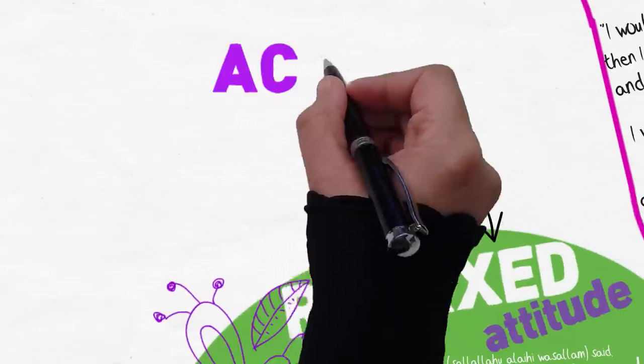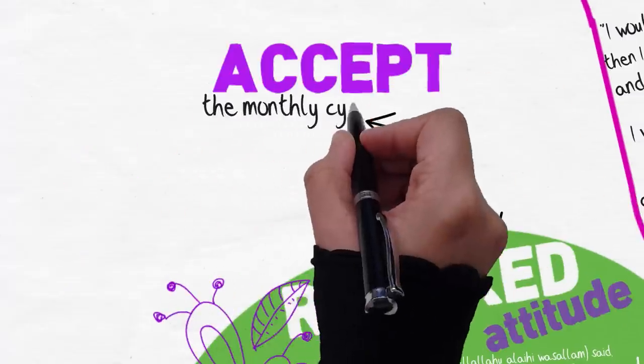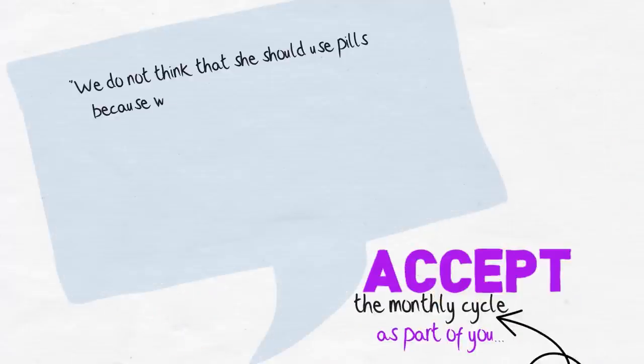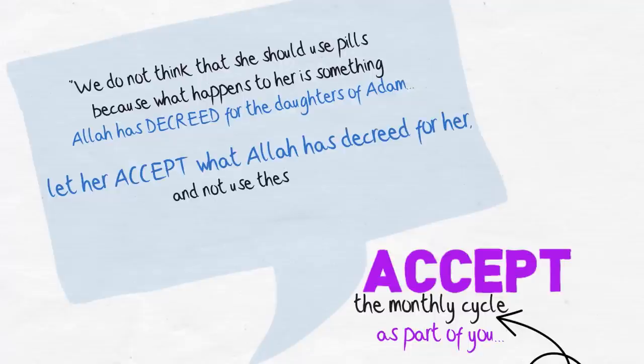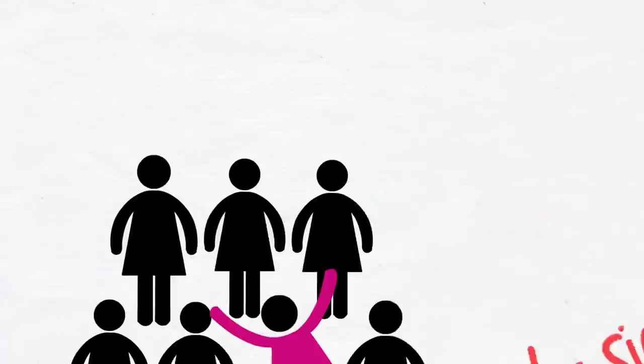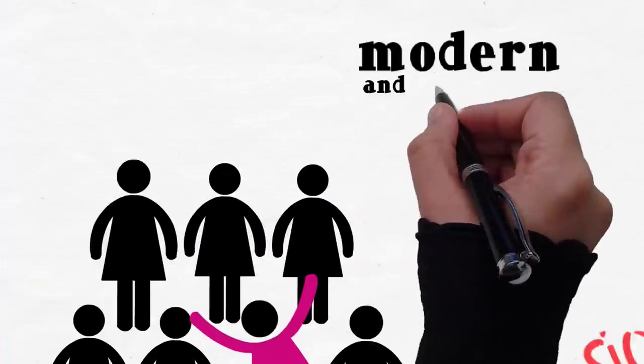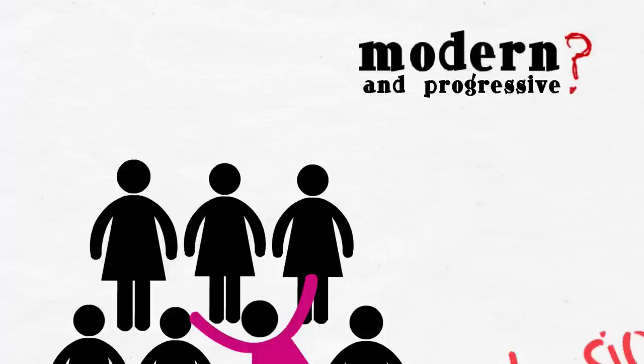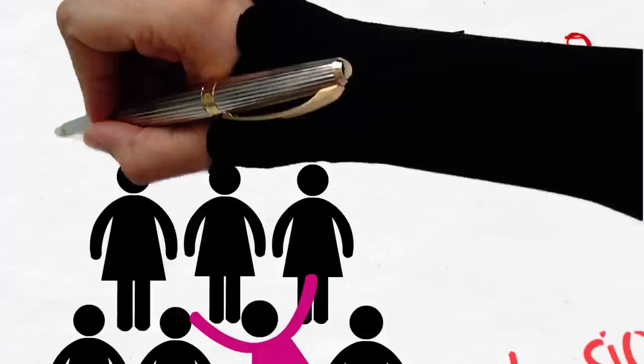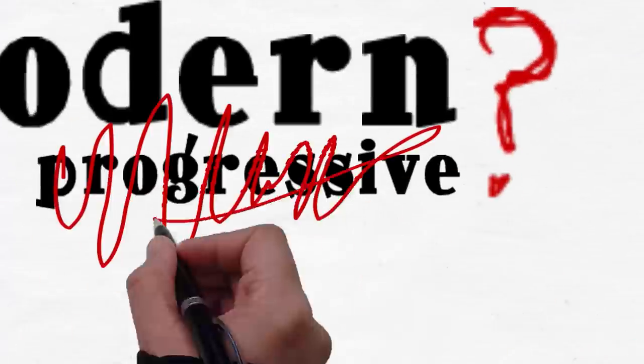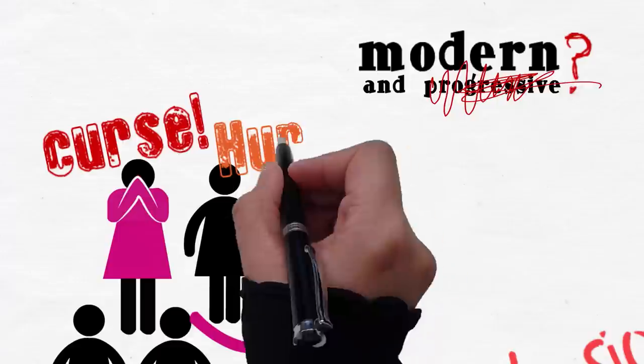And it is this relaxed attitude of accepting the monthly cycle as part of you which is reflected in the explanation of Islamic scholars who discourage taking pills to offset the cycle. But does the seemingly modern and progressive world also take such a relaxed view?